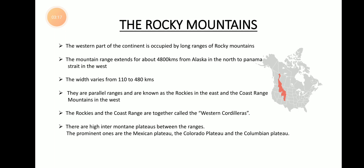The Rocky Mountains extend about 4,800 kilometers in length — a very huge distance. They start from Alaska in the northwest and end at Panama Strait in the southwest. The width of the Rocky Mountains is also very broad, ranging from 110 to 480 kilometers wide.